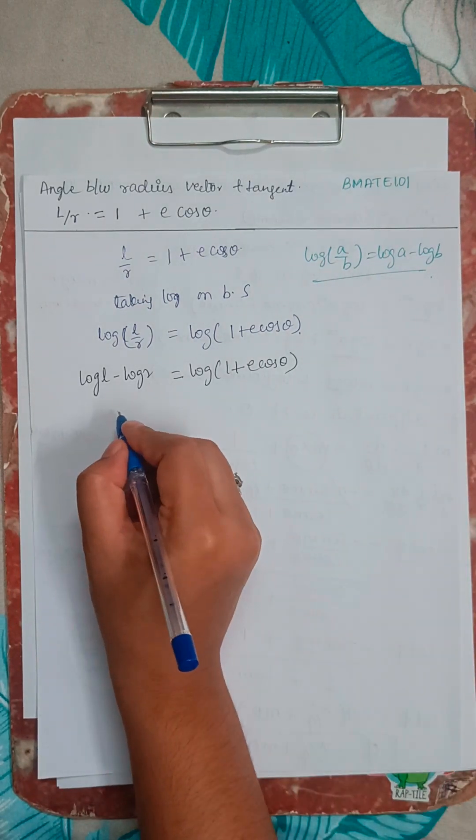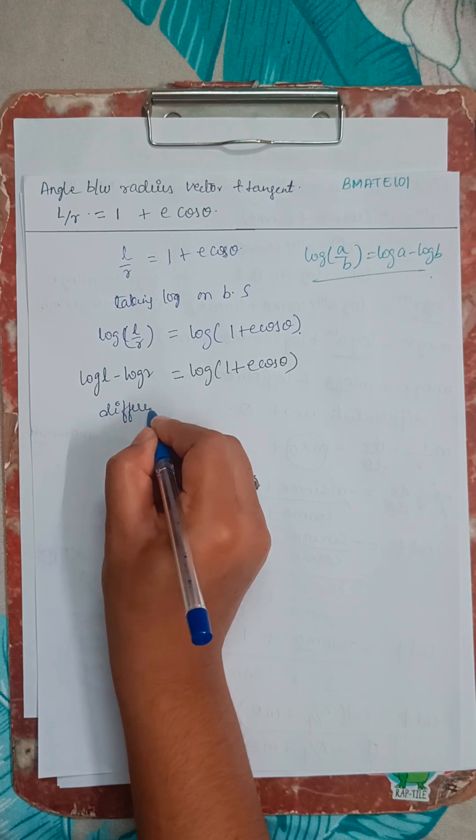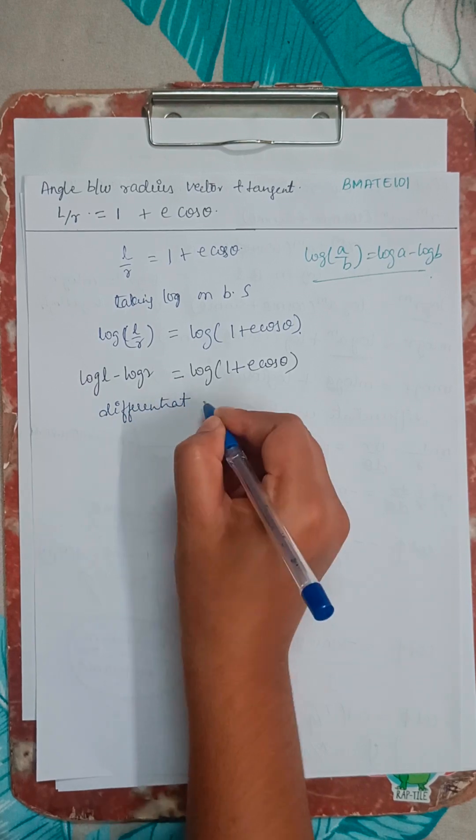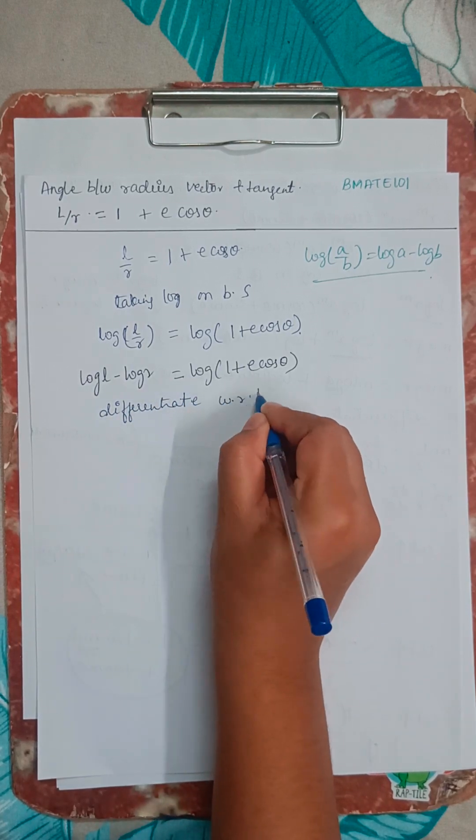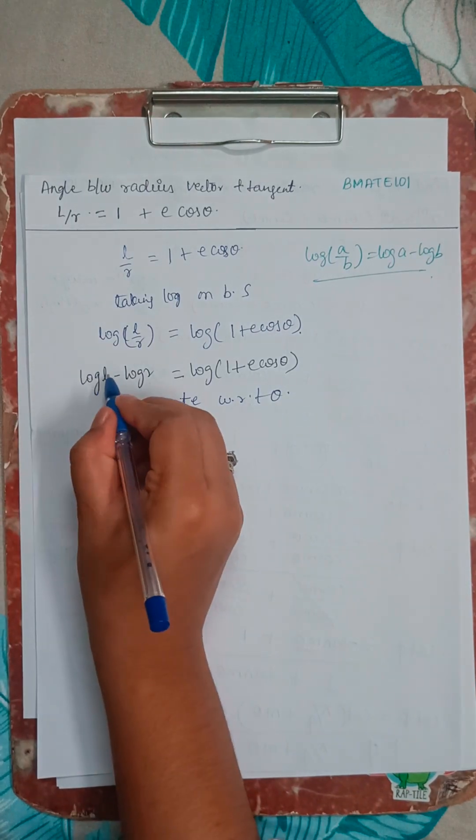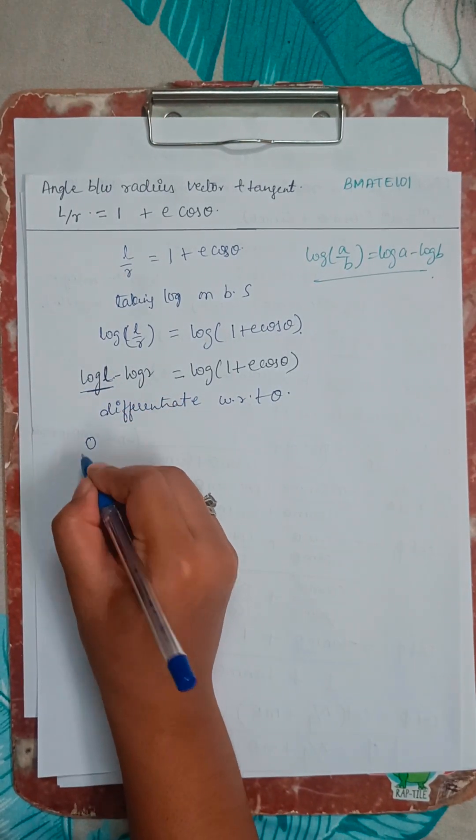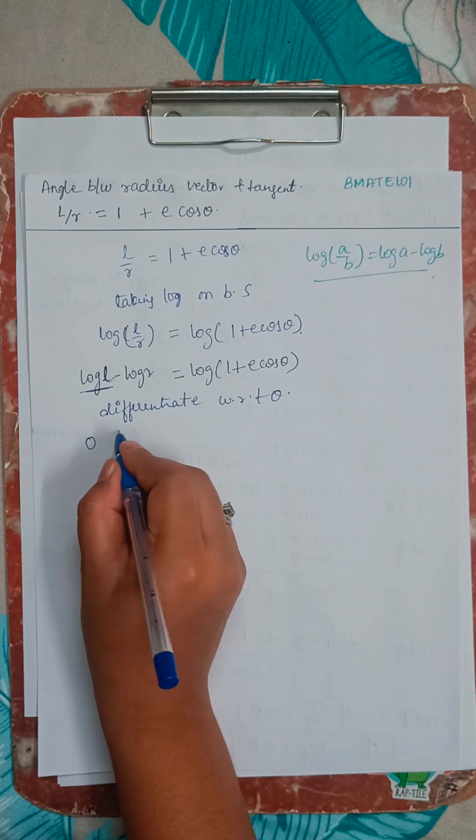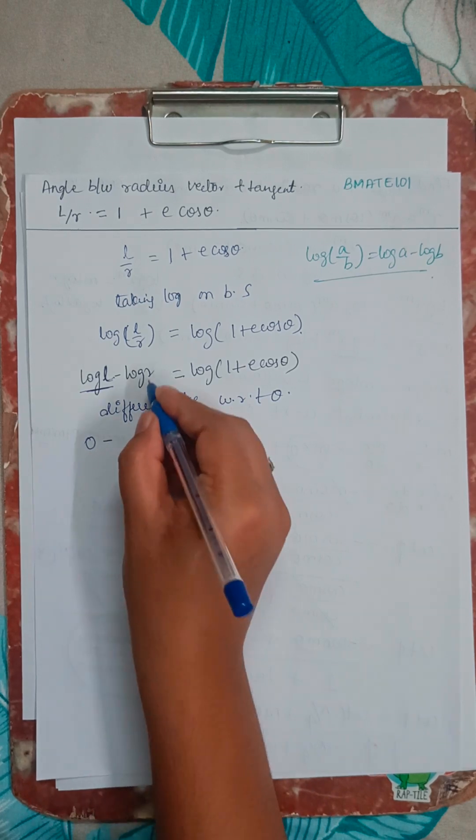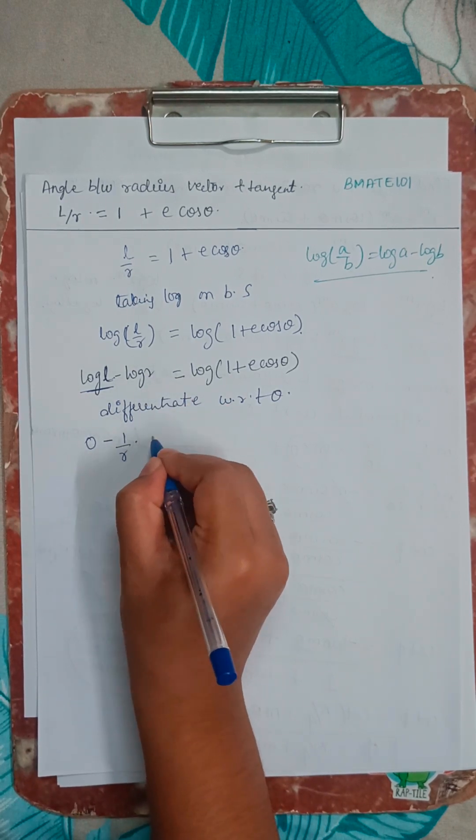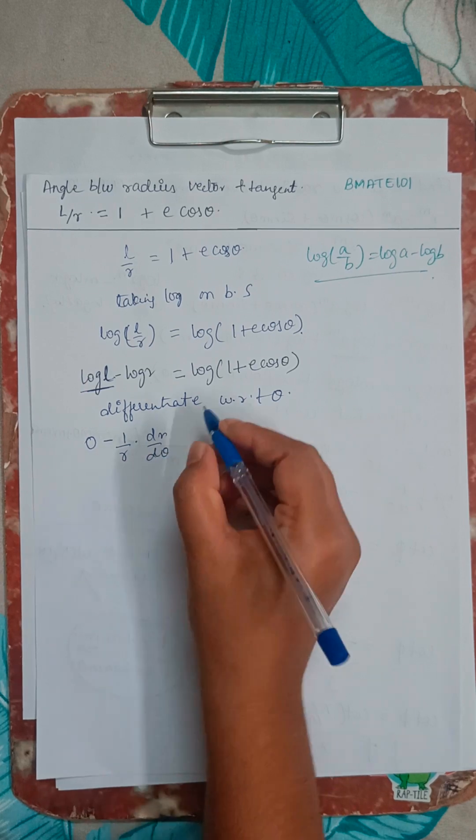So now we will differentiate with respect to theta. So L is here constant. So this is going to be 0. Differentiation of log constant is going to be 0 minus log R is 1 by R into dr by d theta.